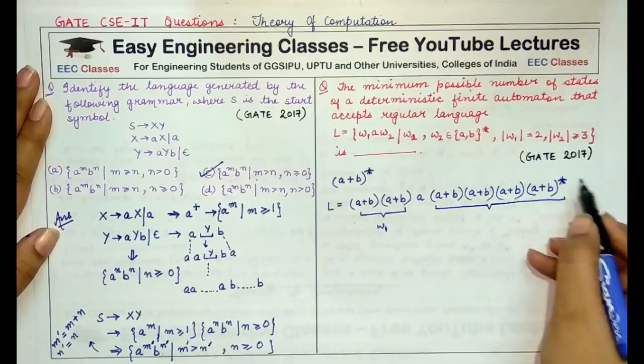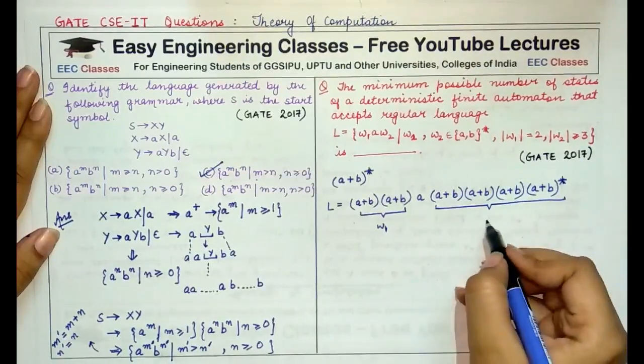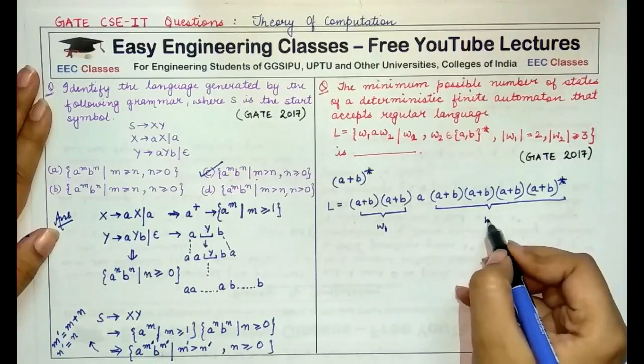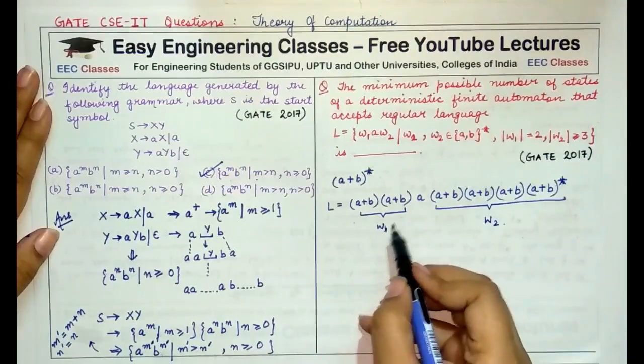Why a star and not a plus? Because there may or may not be more number of A's and B's. So, this forms W2. W1, A, W2 is the language that would be formed.